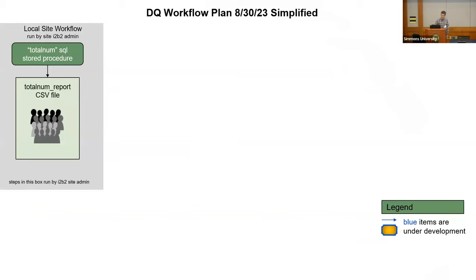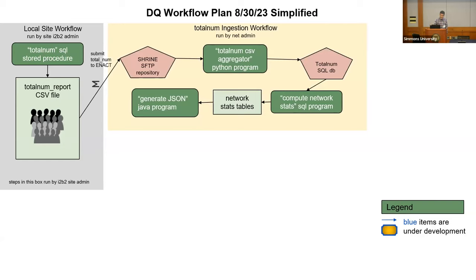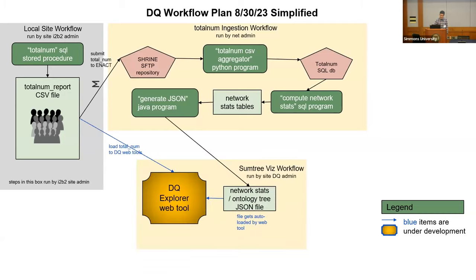This is the simplified version of a diagram from the data quality workgroup describing the pipeline. A local site runs a stored procedure that does all the patient counting. In I2B2 1.8, we hope to automate this with a scheduler component Mike Mendez is writing so it can happen automatically when you update your data. Sites then take that CSV file and, if they choose, put it in a secure location the Shrine team has set up. Those files are grabbed by a Python script, put into a database, and statistics are computed on them.